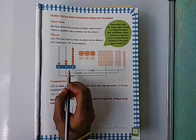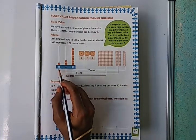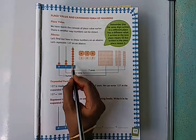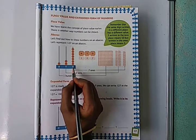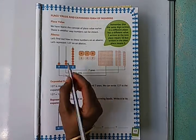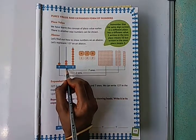Ones rod, tens rod, hundreds rod. In ones place we have seven, so keep seven beads on this ones rod: one, two, three, four, five, six, seven. Next, in tens place two, so in tens rod keep two beads.